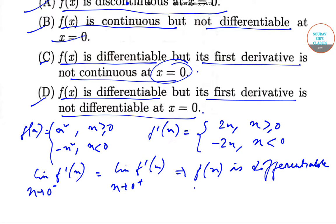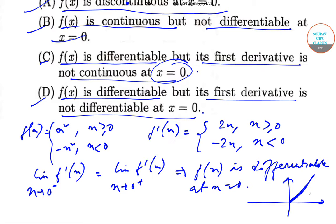Now let us try to draw the function f'(x). If this is the y-axis and this is the x-axis, then f'(x) for x ≥ 0 is 2x — a straight line like this — and −2x will look somewhat like this. As you can see, at x = 0 there is a sharp point in f'(x).